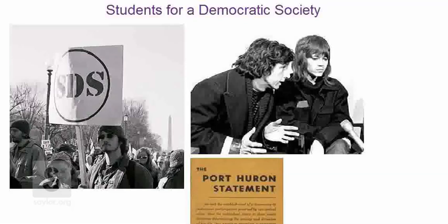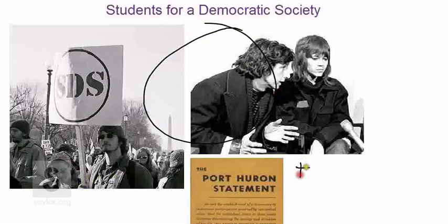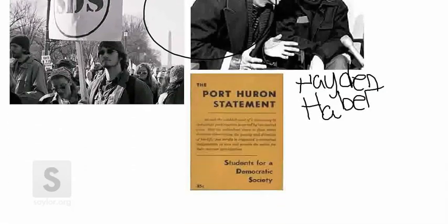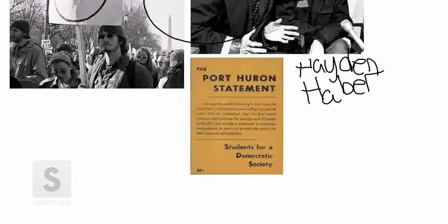SDS comes from a number of young college-age people who are members of an organization called the League for Industrial Democracy. They meet at a summer camp run by the United Auto Workers at Port Huron, Michigan. Two key figures — Tom Hayden and Al Haber — decide they want to take this organization and reinvent it as a more effective, more powerful political force in American society. During the summer of 1962 at Port Huron, they sit down and write something called the Port Huron Statement.